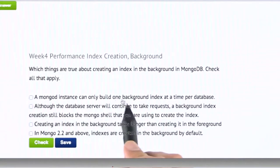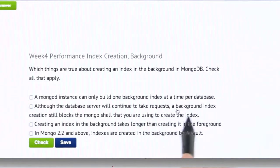A MongoD instance can only build one background index at a time per database. Although the database server will continue to take requests, a background index creation still blocks the Mongo shell that you're using to create the index. Creating an index in the background takes longer than creating it in the foreground. In MongoDB 2.2 and above, indexes are created in the background by default.